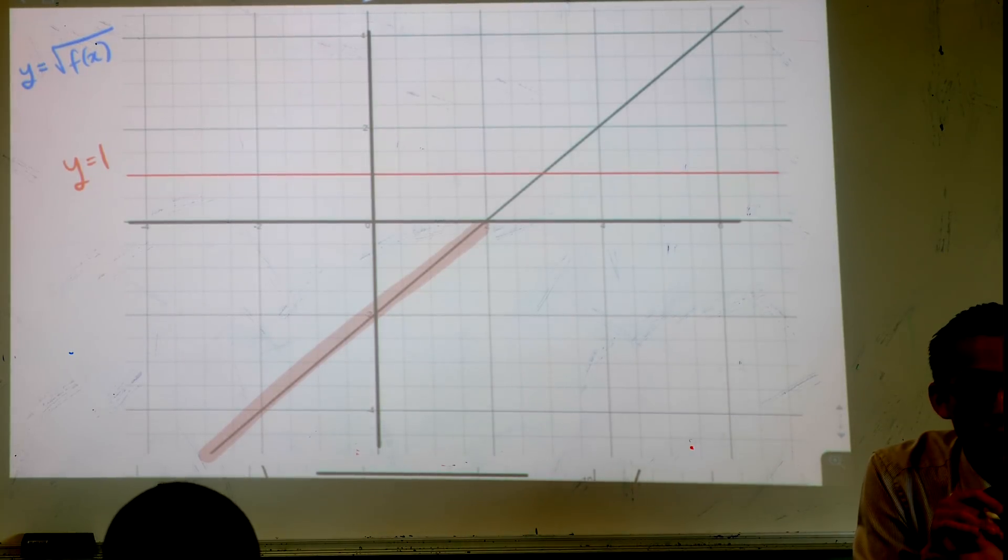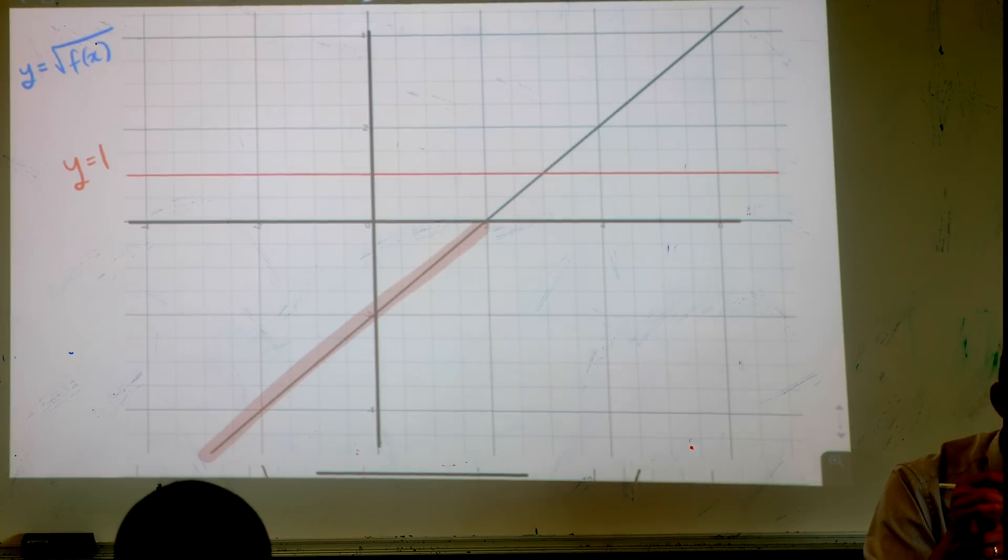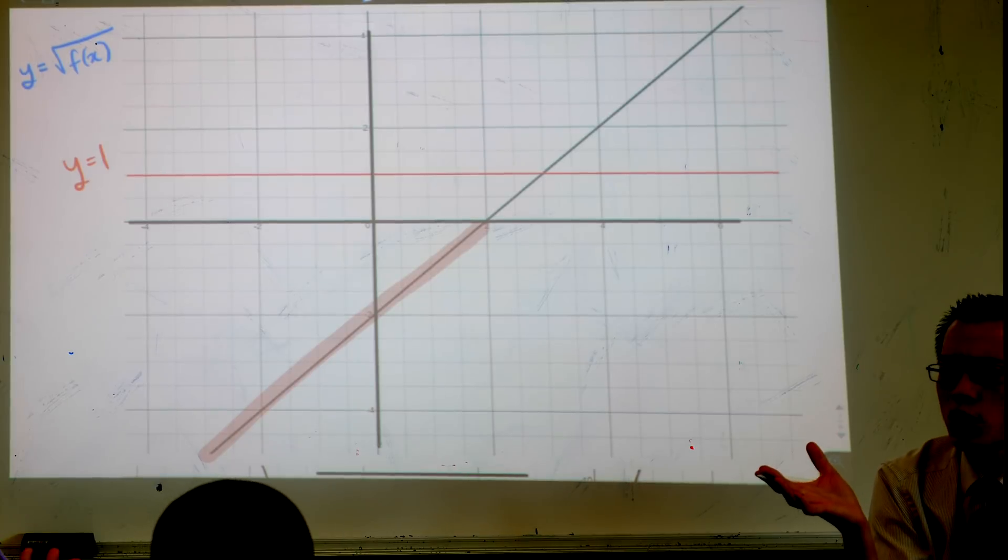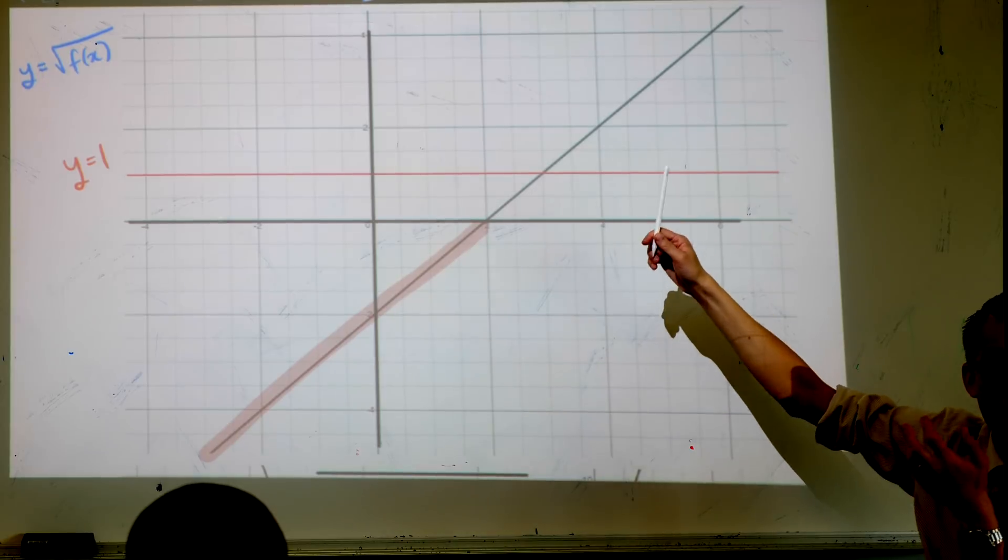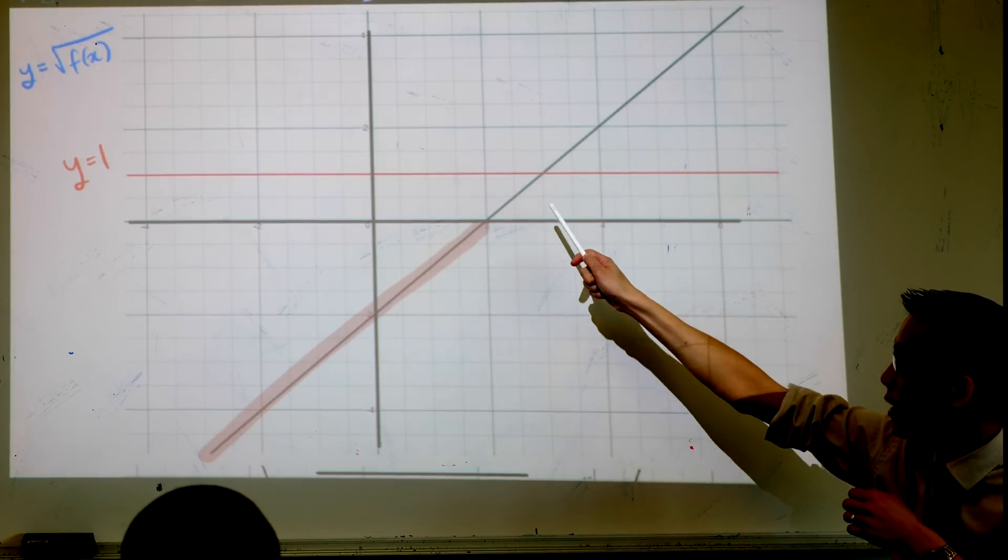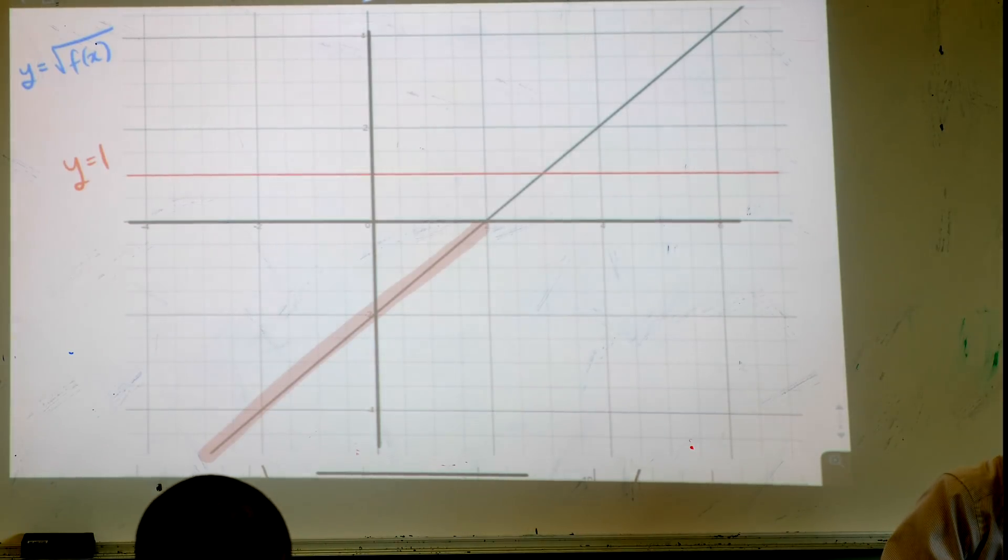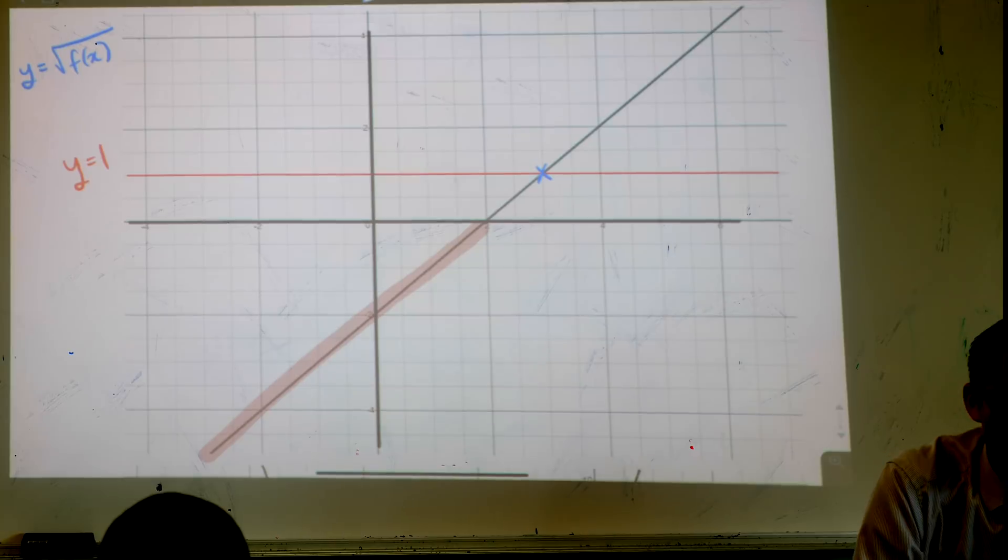Then we also graphed y equals 1. Why do you think y equals 1 might be important when we're thinking about square roots? What's the square root of 1? It's 1. So anywhere that our original function intersects with y equals 1, like right there, when you take the square root of that you're also going to get 1.